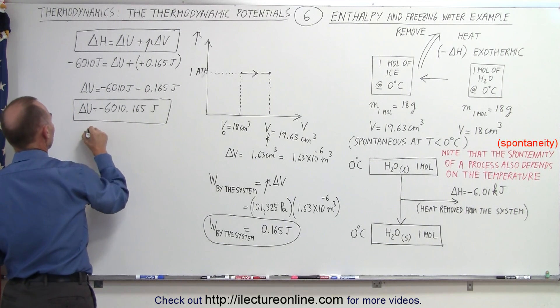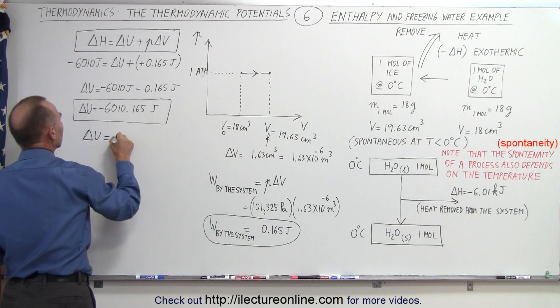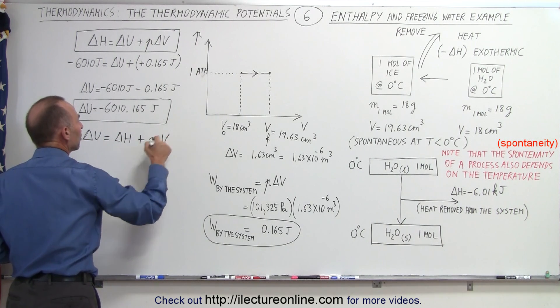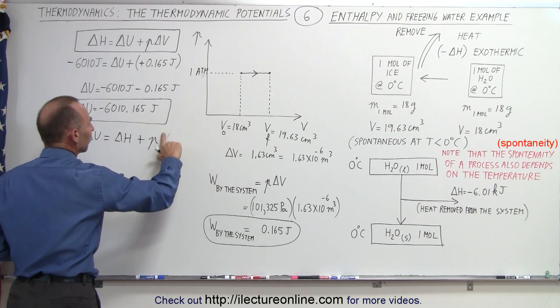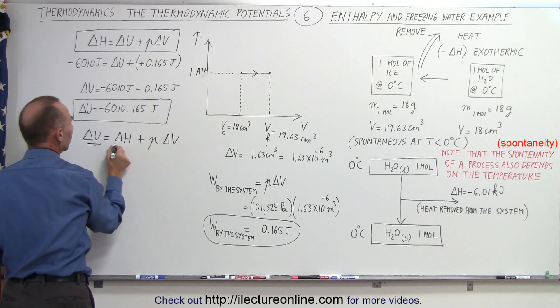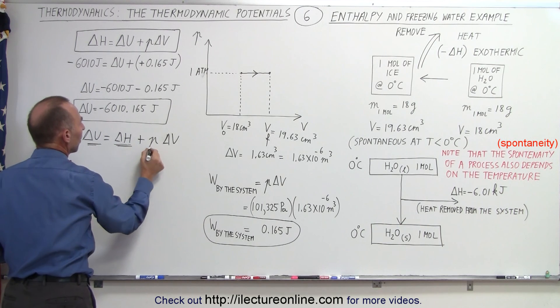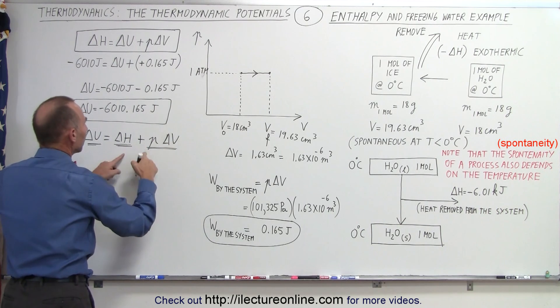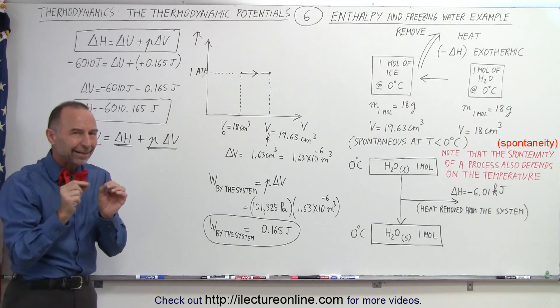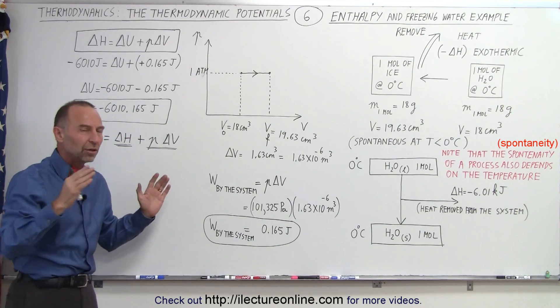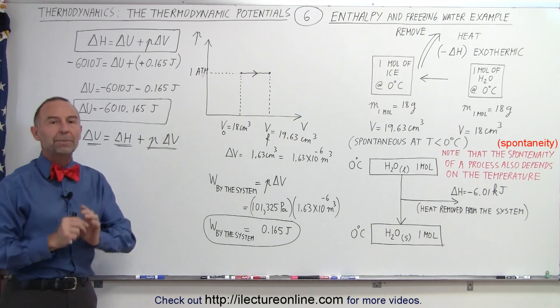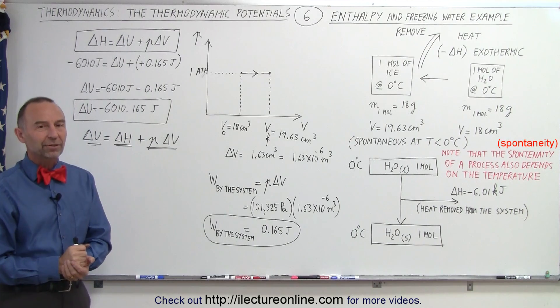So in essence, we have the delta U here, which is equal to the delta H plus the work done by the system, so P times delta V. So you can see that the change in internal energy is both the heat removed from the system plus the work done by the system combined is the total change in internal energy. And so you can see that delta H and delta U is not necessarily the same thing. If there was a change in volume, they will not be the same. And that's how we can tell the difference.